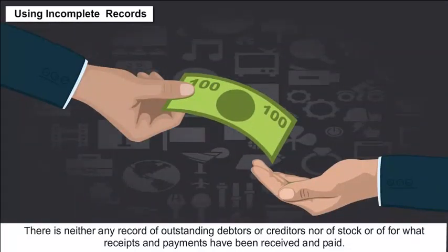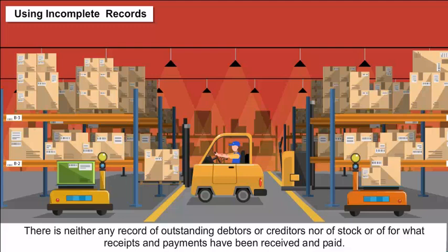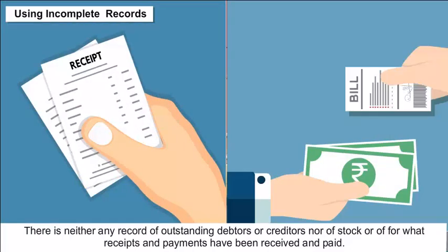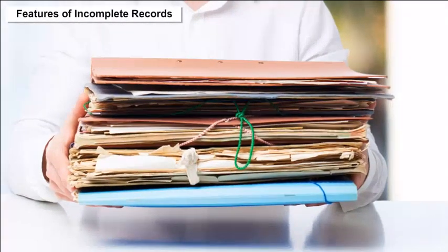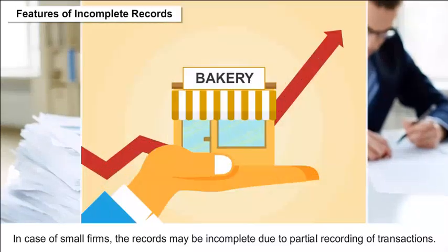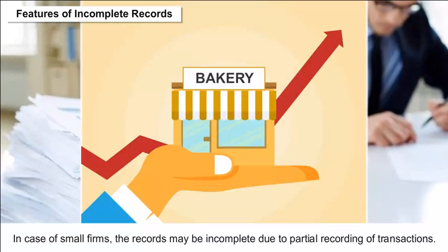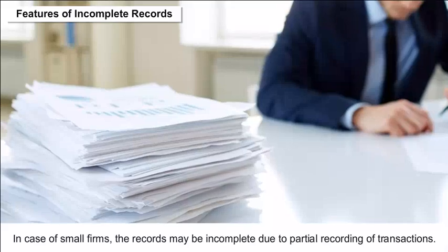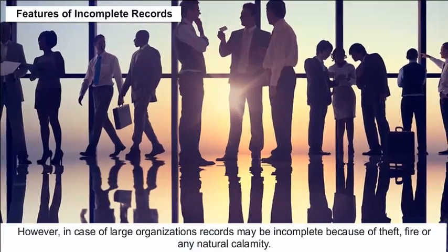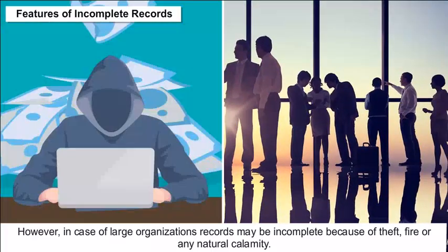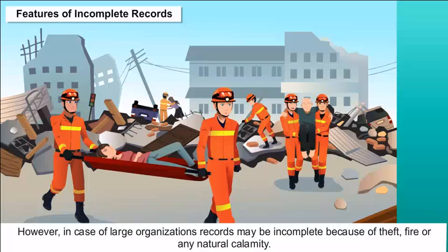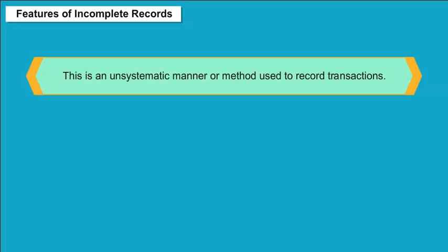Using incomplete records cannot give accurate period-end financial statements, as they do not disclose all the figures and facts. There is neither any record of outstanding debtors or creditors, nor of stock, or of what receipts and payments have been received and paid. In case of small firms, the records may be incomplete due to partial recording of transactions. In case of large organizations, records may be incomplete because of theft, fire, or any natural calamity.